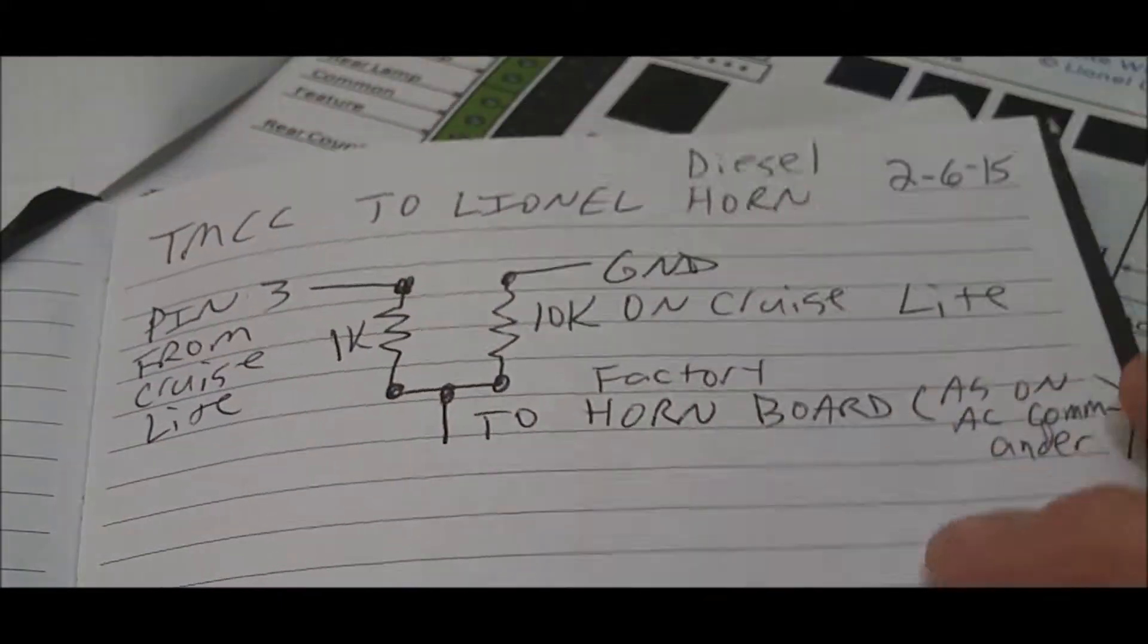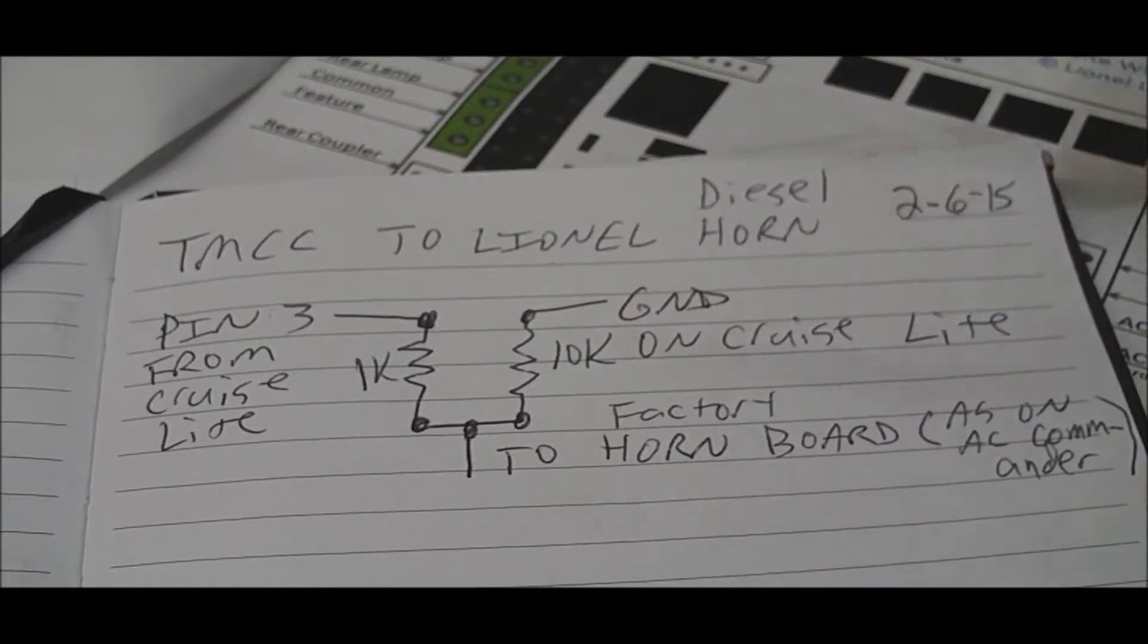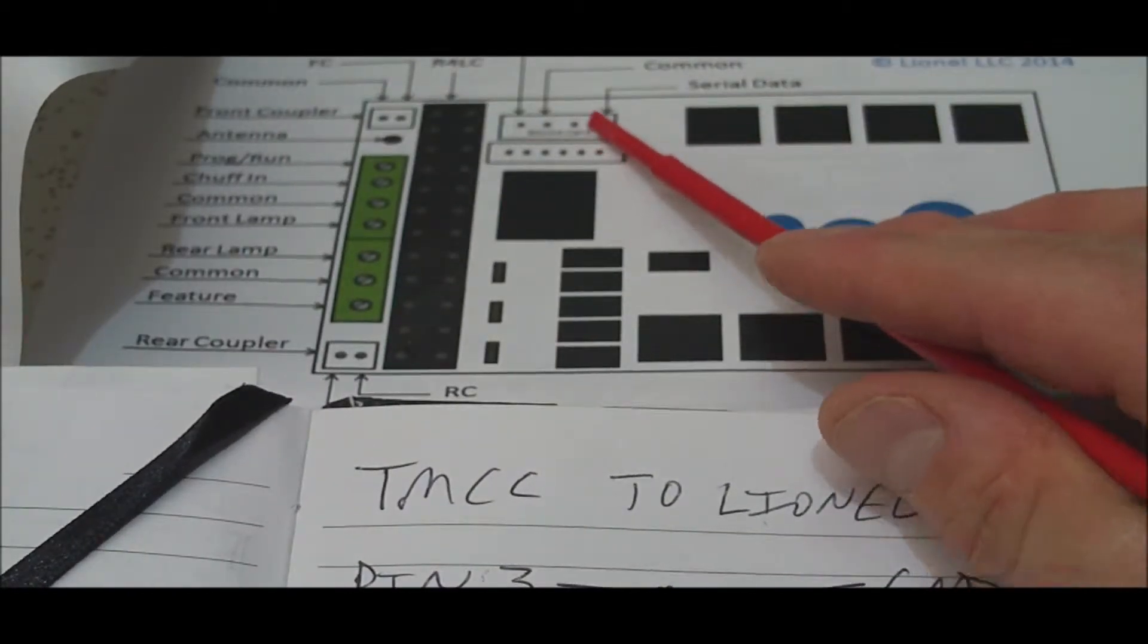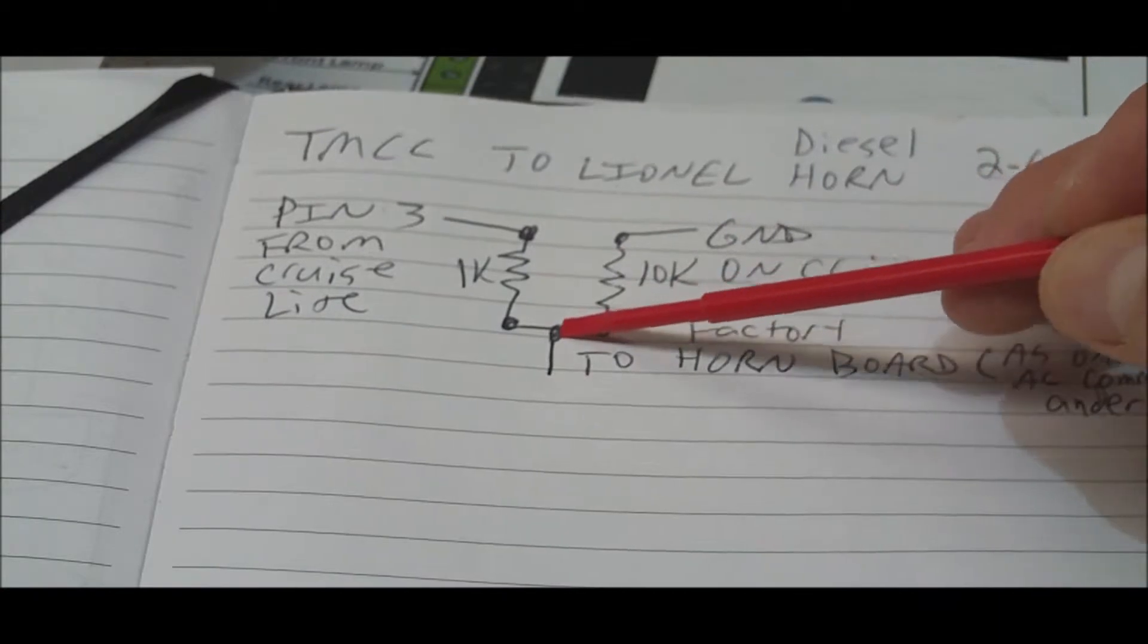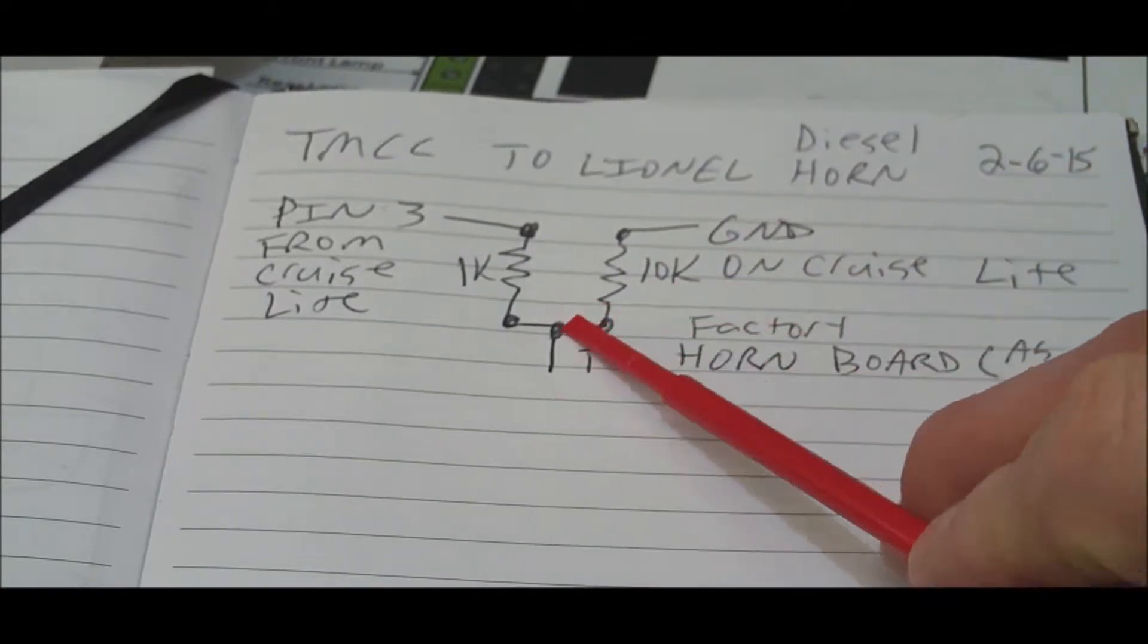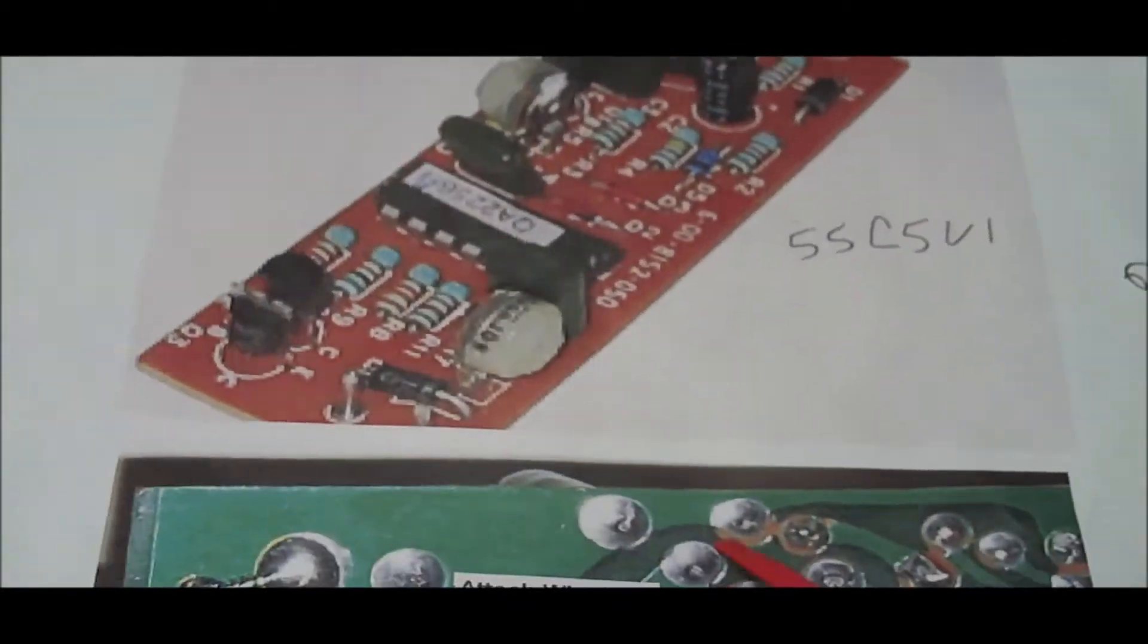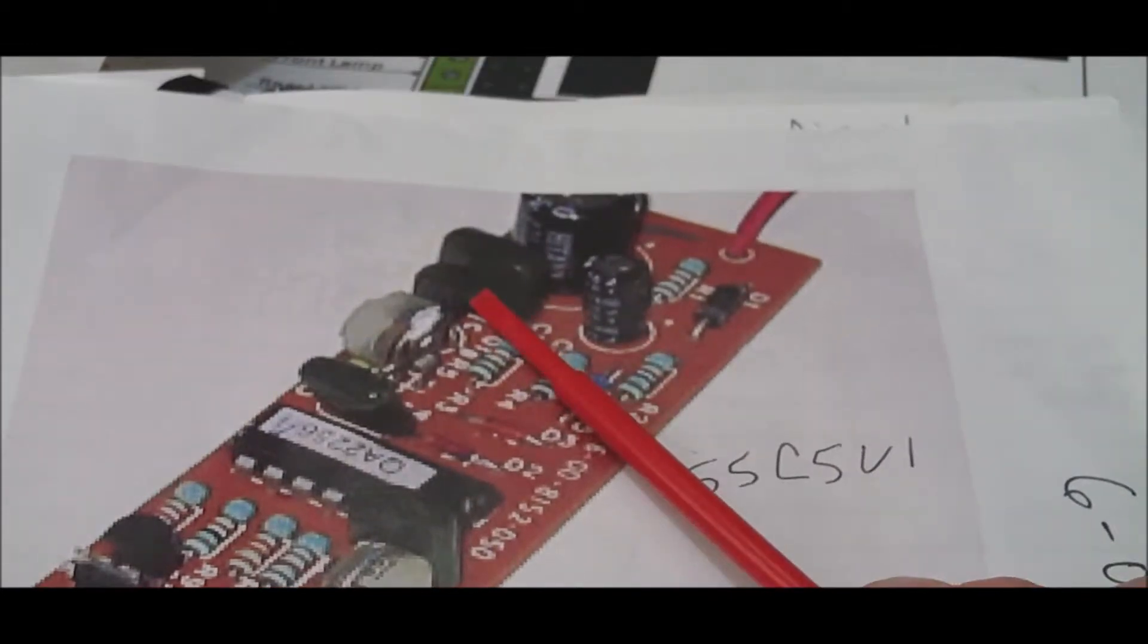This is the circuit that I came up with. It is a TMCC to Lionel diesel horn. Pin three from the cruise light, which is this one here that has nothing connected to it, goes through a 1k resistor. From that 1k resistor, the other end you're going to tie into the wire that attaches to this board right here which goes to the base of the transistor.